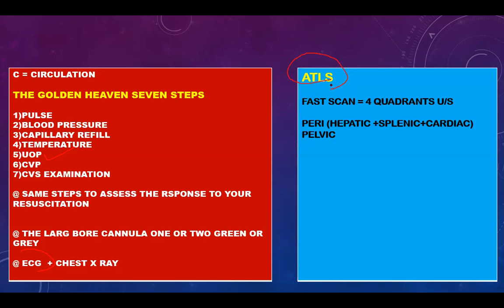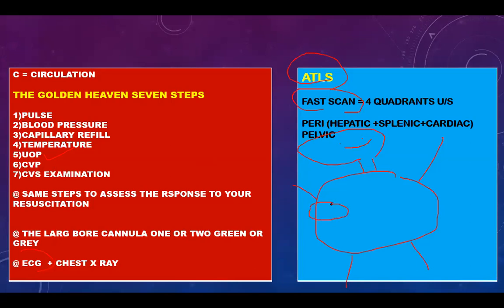An additional step in ATLS is the FAST scan to detect the four quadrants. The four quadrants are: perihepatic on the right, perisplenic on the left, the pelvic area, and the pericardial area. The FAST scan is used in emergency to detect any collections in these four quadrants.